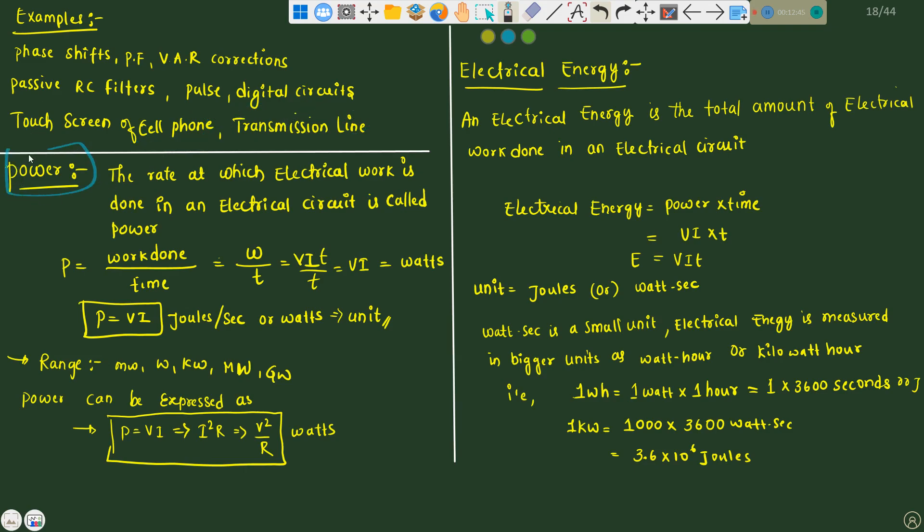Now quickly look into power. What is power? The rate at which electrical work is done in an electrical circuit is called power. Unit of power is watts and it is represented like p equals to v into i joules per second or watts, work done per time taken. Ranges lies from milliwatt, watt, kilowatt, megawatt or gigawatt. Power can be expressed as p equals to v i or i square into r or v square divided by r. i square r is power dissipated in an element.